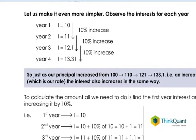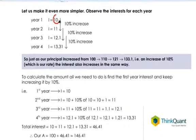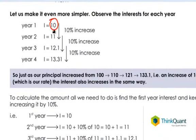Let's make it even more simple. Let's observe the interest. The interest for the first year was 10 rupees, in the second year it was 11 rupees, the third year it was 12.1, and the fourth year it was 13.31.